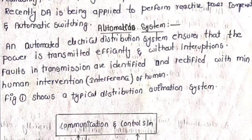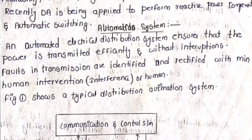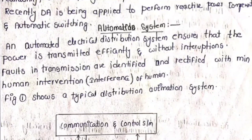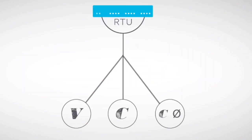An automated system means automatically detecting the fault, automatically checking the fault, and automatically giving the result to the electrical engineer or reporting the abnormal condition of the circuit through switches, communication system, RTU, GUI, and power quality indicators.